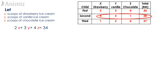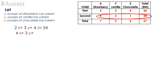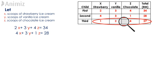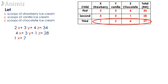For the second child, she buys ice cream which costs RM4, RM3 and RM1 for a scoop of strawberry, vanilla and chocolate respectively and spends RM28 in total on the second child. For the third child, the cost is RM1, RM2 and RM4 for a scoop of strawberry, vanilla and chocolate respectively and the total spent on the third child is RM27. This is represented as X plus 2Y plus 4Z equals to 27.